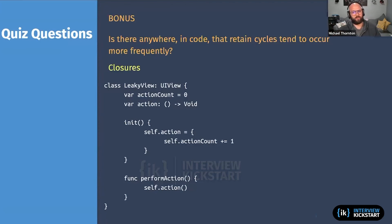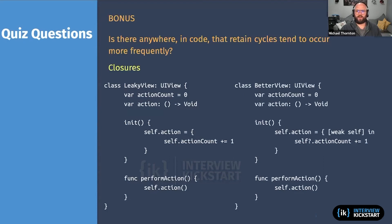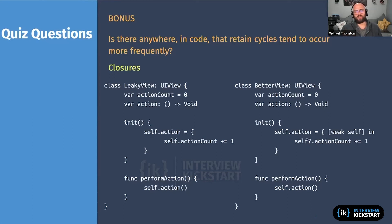The two solutions are 'weak self' and 'unowned self.' Adding 'weak self' in the closure capture list makes self an optional, so you need to use optional chaining or unwrap it when referencing self. The other approach is 'unowned self,' but you have to be extra careful — if the object has already been deallocated when the closure is called, it will crash. You should only use unowned self when you are absolutely guaranteed the object has not been deallocated prior to the completion being called.